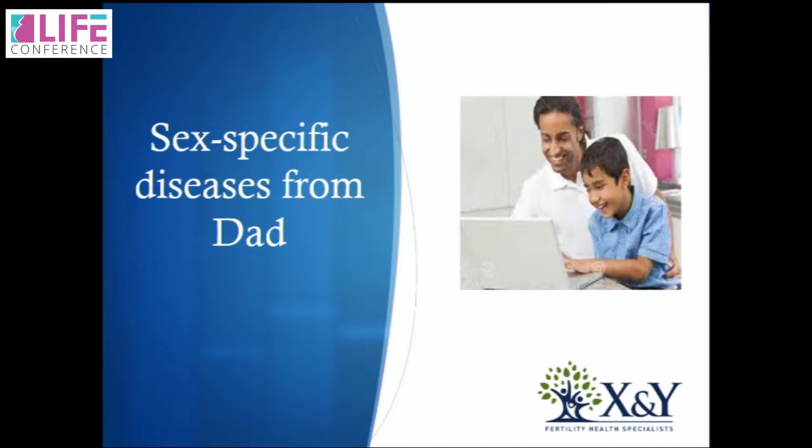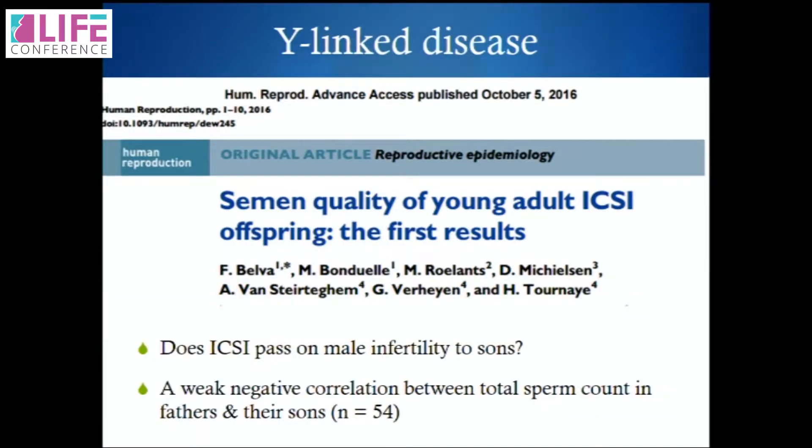Sex-specific diseases from dad: we need to look at what I'll call a Y-linked disease, namely male infertility. We need to think about ICSI here. ICSI came about in 1992 when Palermo published the first study from the Brussels group in Belgium. There was concern that if we use ICSI for men with male infertility, are we creating sons who will also have male infertility? The sons from that first group are now adults, and tests show there is indeed male infertility in them — a weak negative correlation from 54 people — suggesting we are providing another generation of male infertility.